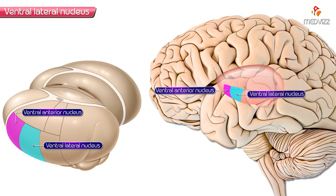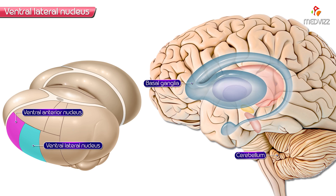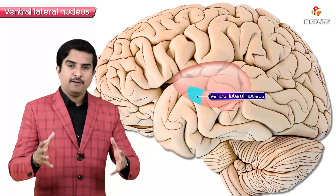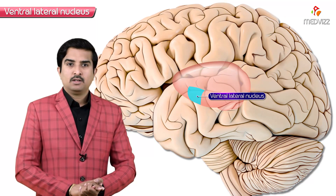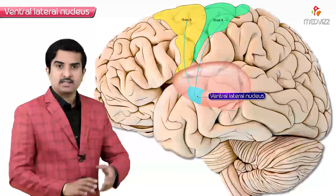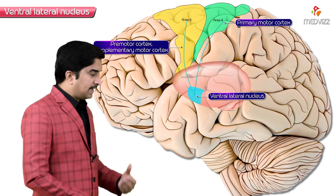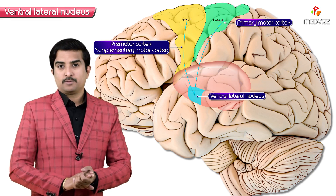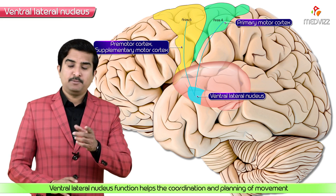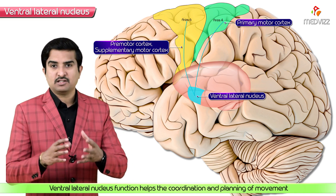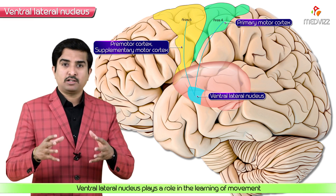Both the ventral anterior and ventral lateral nuclei are important parts of the mechanism by which the basal ganglia and cerebellum exert their influences on normal movement, and through which movement abnormalities are mediated in basal ganglia and cerebellar disorders. The main function of the ventral lateral nucleus is to target efferents including the motor cortex, pre-motor cortex, and supplementary motor cortex, helping coordinate the planning of movements.